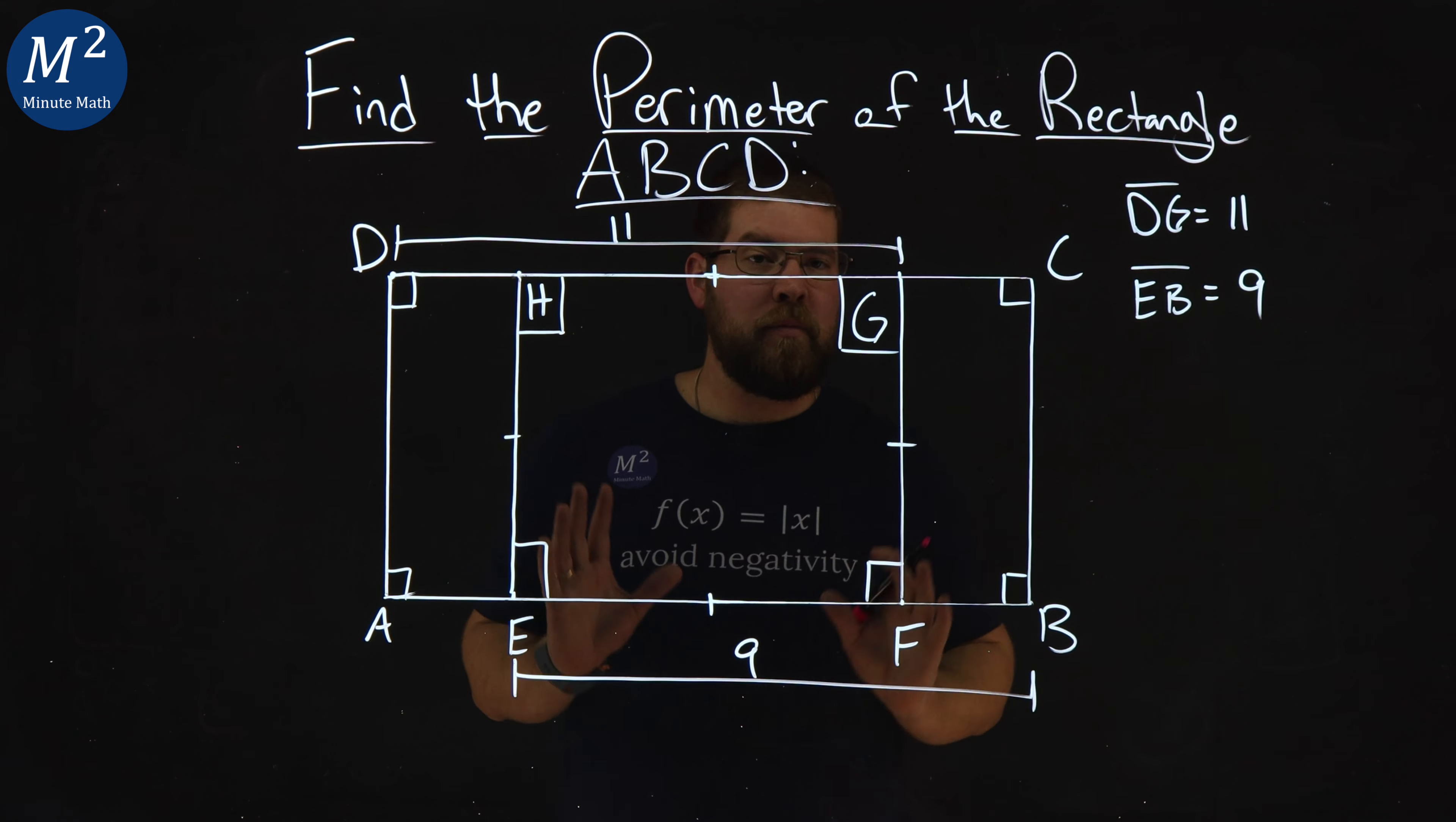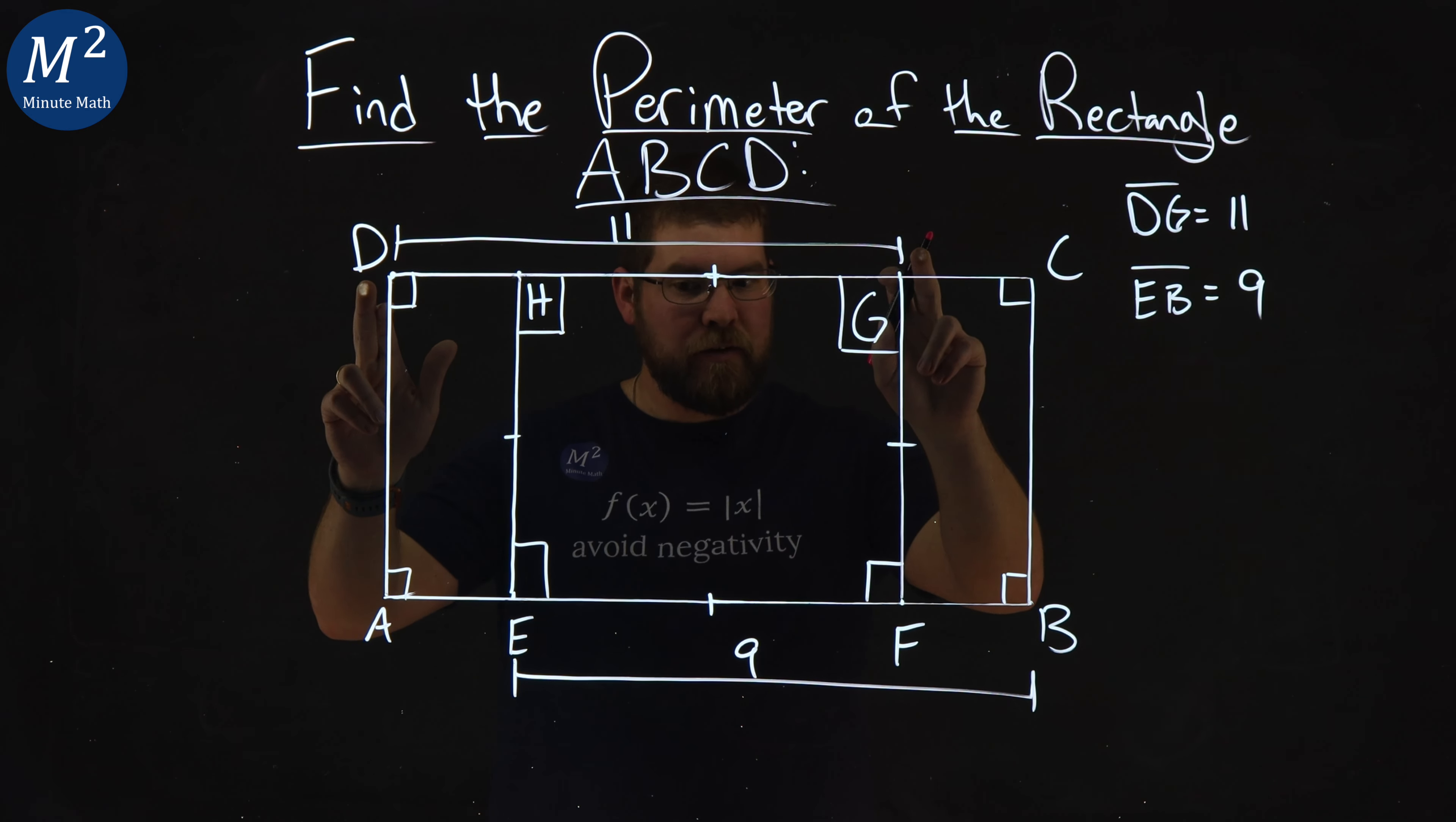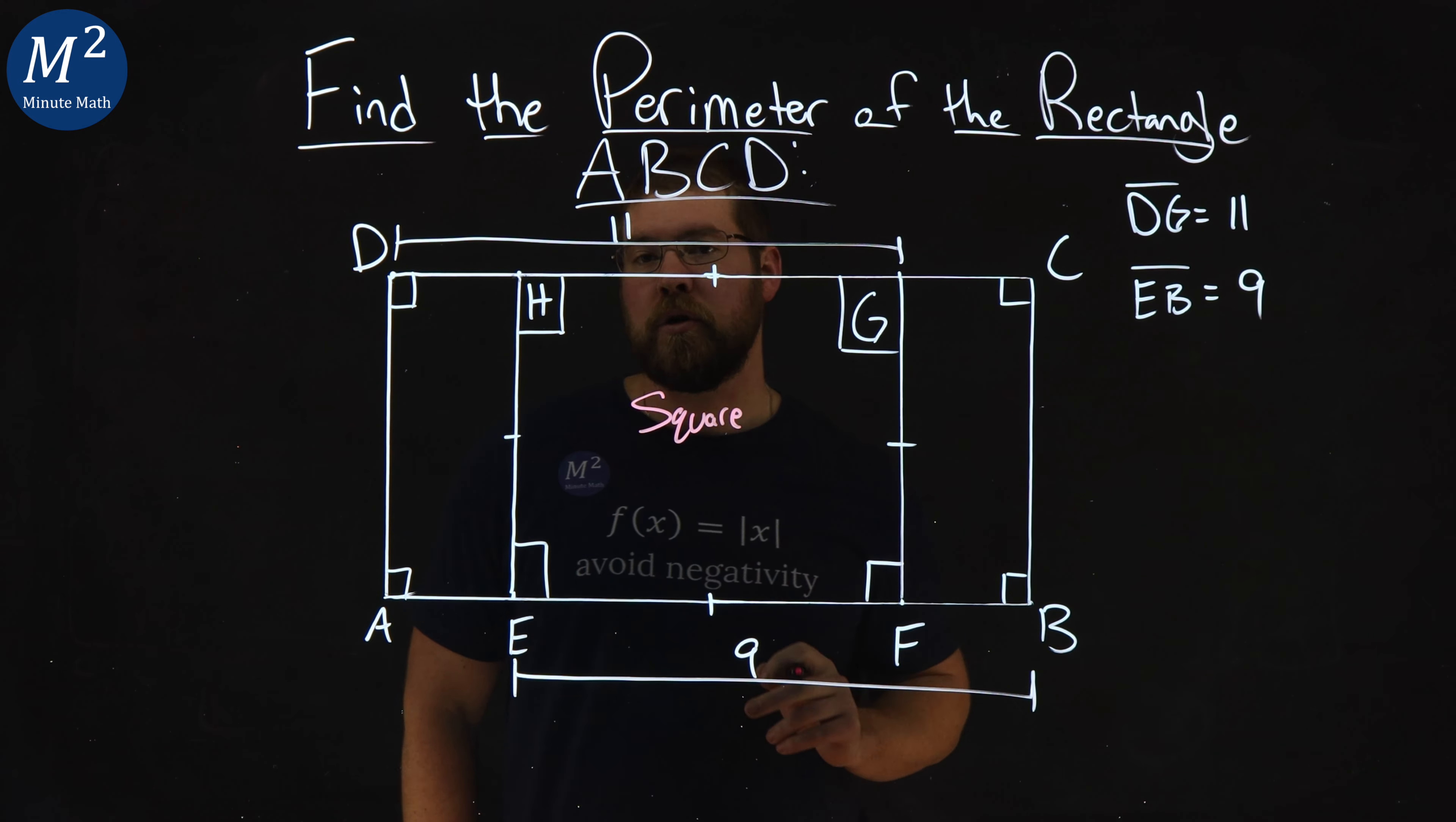So we have a lovely shape, and some things are given to us here. We clearly have a rectangle ABCD. We have a side length DG is 11, and the length of EB is 9. The inside little square here is, in fact, a square. All side lengths are congruent, and the corners are all 90 degrees.